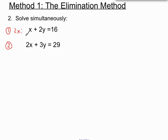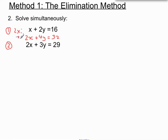You'll see that helps us match up the x terms. If we multiply each term by 2, we'll have 2 times x which is 2x, plus 2 times 2y which is 4y. And we also have to do 2 times 16, which is 32. Now once we've done that and adjusted that first equation, we could call this new equation equation 3.